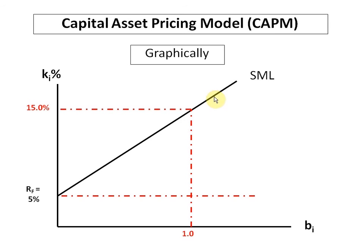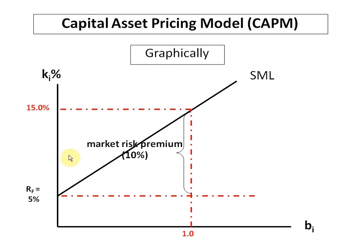Let us now build in the remaining details. Look at the region highlighted by this bracket. The risk free rate of return is 5%, but if instead of investing in a risk free asset you take your money to the market — which is a risky place with a beta of 1 — you earn some extra return over and above the risk free return. The market return is 15%, so there is an extra 10% to be gained by investing in the market, and that extra 10% we call the market risk premium.